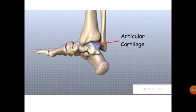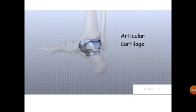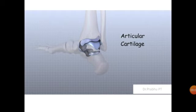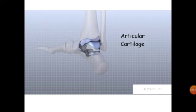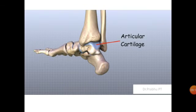Looking at the lateral and medial sides, you can see the cartilage. The most common bone in the ankle to have a cartilage injury is the talus. The cartilage of the talus is like any other articular cartilage and is arranged similarly to other weight-bearing joints. Damage to the articular cartilage is a very serious injury, as it affects the person's ability to walk.